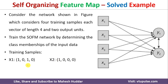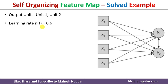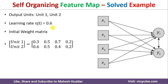We have four input data: X1 = [1,0,1,0], X2 = [1,0,0,0], X3 = [1,1,1,1], and X4 = [0,1,1,0]. We also have two output units. The learning rate is 0.6, and the initial weight matrix is given. For unit 1, the weights are 0.3, 0.5, 0.7, and 0.2.